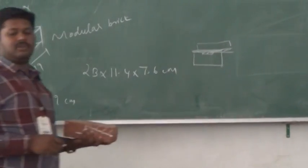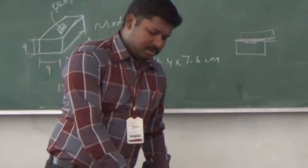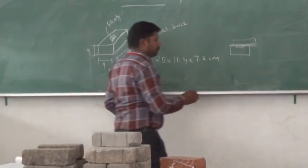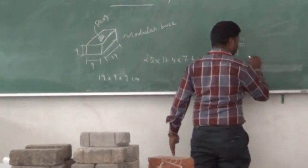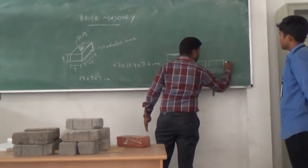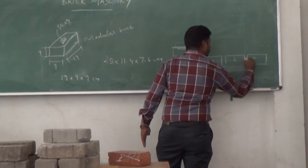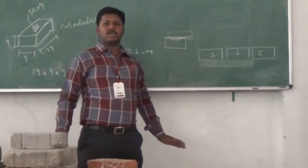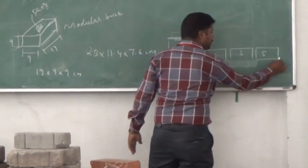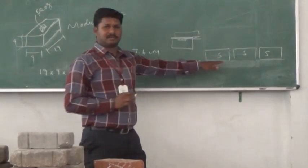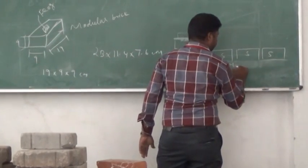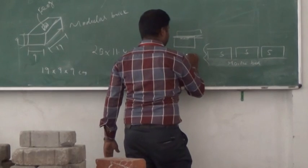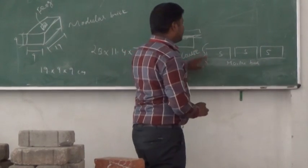This is like a bonding — here will be the frog. Next, the course. The course is the horizontal layer of the brick masonry. Between the bottom of each course is a mortar bed, like a mortar joint. This is called the course.